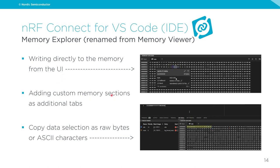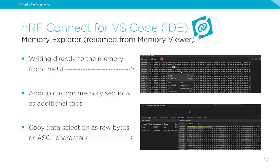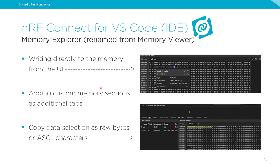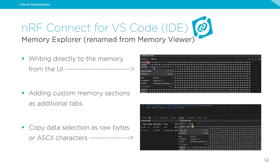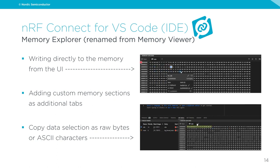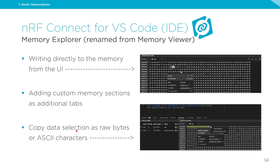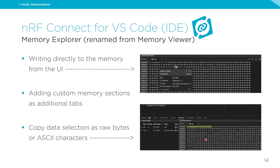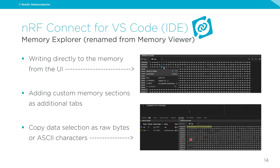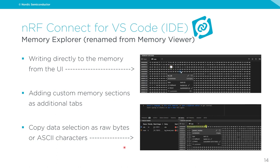You can also add custom memory sections as additional tabs. By clicking the plus arrow and indicating a memory section, you can focus on areas containing important buffers or data. For example, you could create a tab showing memory between two specific addresses. Additionally, you can copy data from the Memory Explorer — copying raw data gives raw bytes, and if ASCII visualization is enabled, you can copy it as ASCII characters.